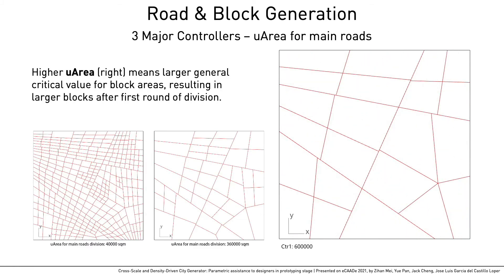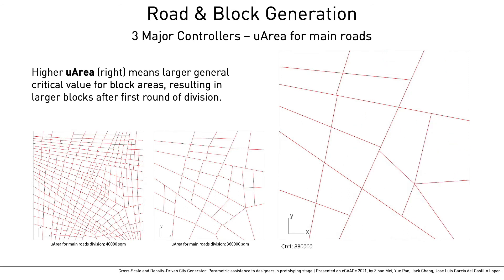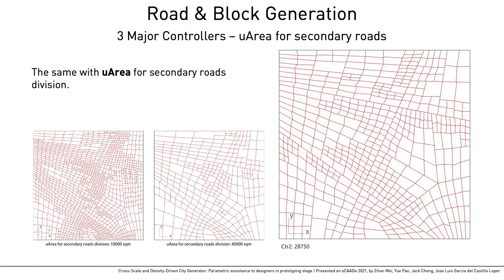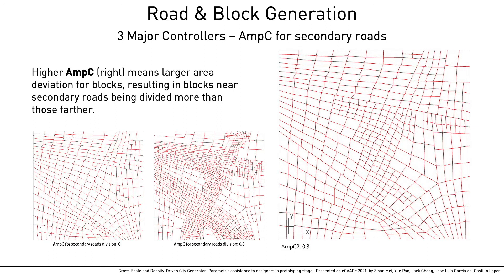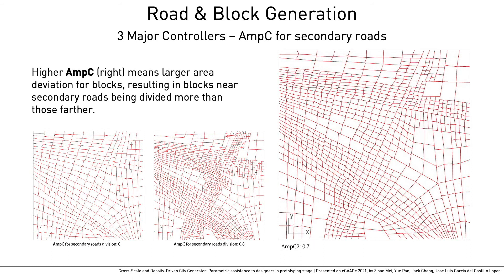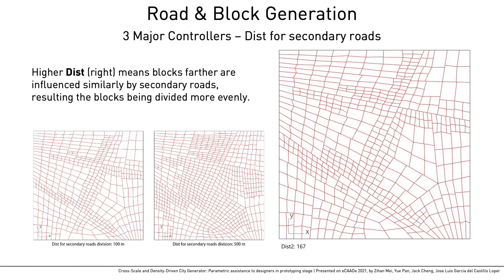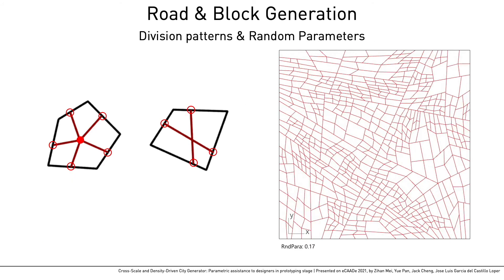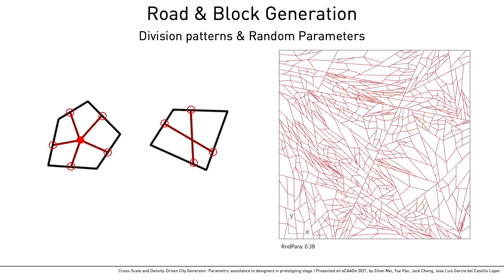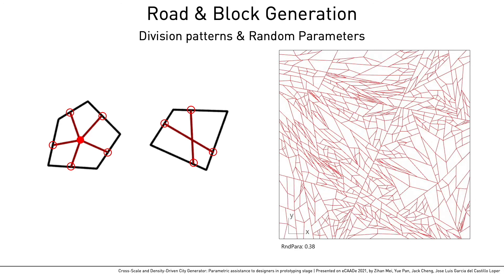This comparison shows that a larger universal size on the right results in larger blocks after division by main roads, and the same with secondary roads division. Higher amplitude controller on the right makes blocks near roads much smaller than those farther away. Higher critical distance on the right makes blocks divided more evenly. We also applied two division patterns for different shapes and two parameters for the location of the division point on each border, to allow choice between rigid and organic grids.